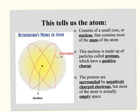This tells us that the atom consists of a small core, the nucleus, which contains most of the mass. The nucleus is made up of protons, which have a positive charge. The protons are surrounded by negatively charged electrons, but most of the atom is actually empty space — you've got your nucleus, with tiny electrons going around it, and almost all of this is empty.